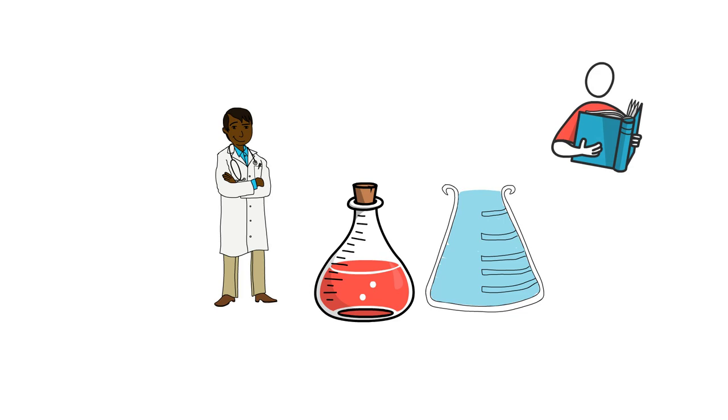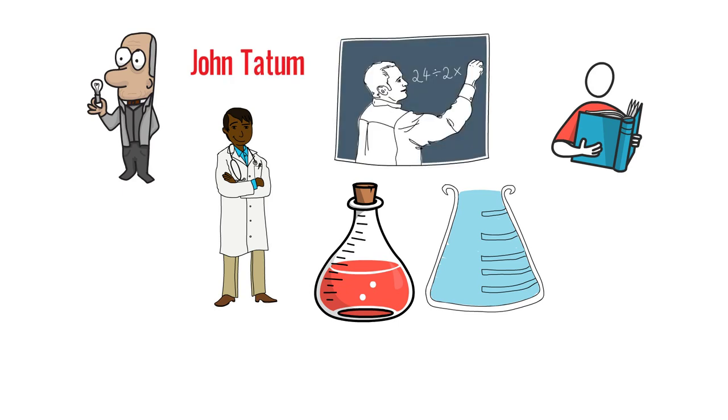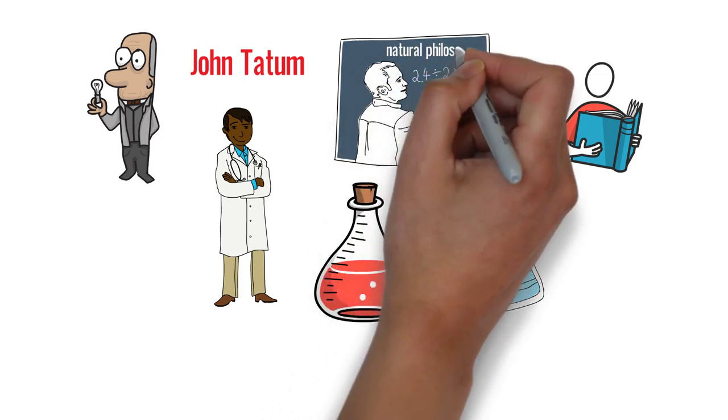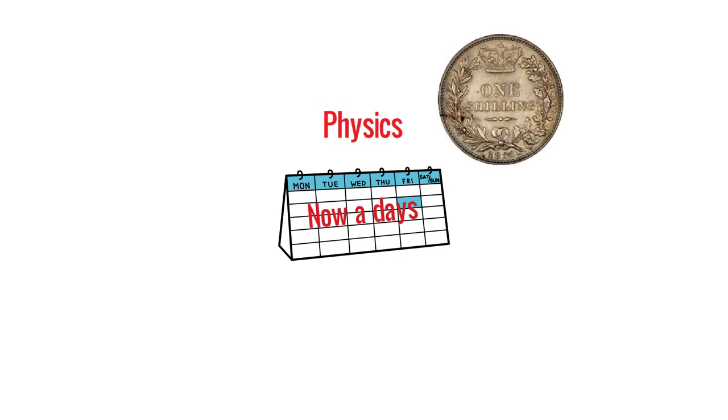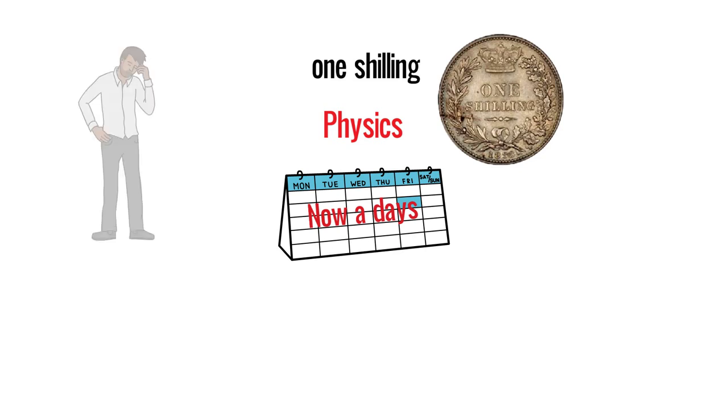As he learned more about science, he heard that the well-known scientist John Tatum was going to give a series of public lectures on natural philosophy. Nowadays, natural philosophy is known as physics. To attend the lectures, the fee would be one shilling. Shilling was a kind of currency at the time, which was too much for Michael Faraday.